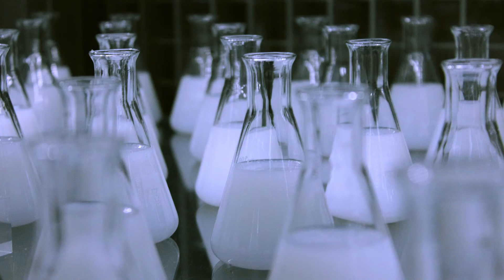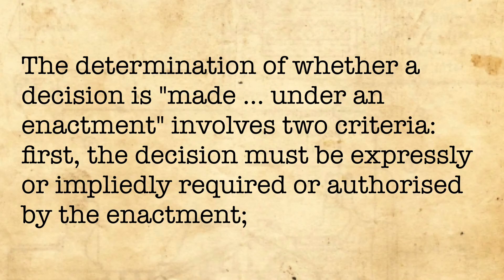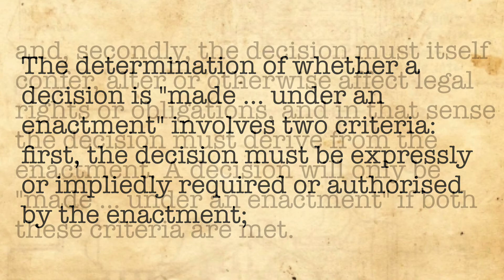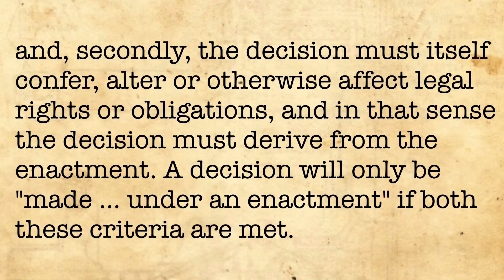Justices Gummow, Callinan, and Hayne said: the determination of whether a decision is made under an enactment involves two criteria. First, the decision must be expressly or impliedly required or authorised by the enactment. And secondly, the decision must itself confer, alter, or otherwise affect legal rights or obligations — and in that sense, the decision must derive from the enactment. A decision will only be made under an enactment if both these criteria are met.